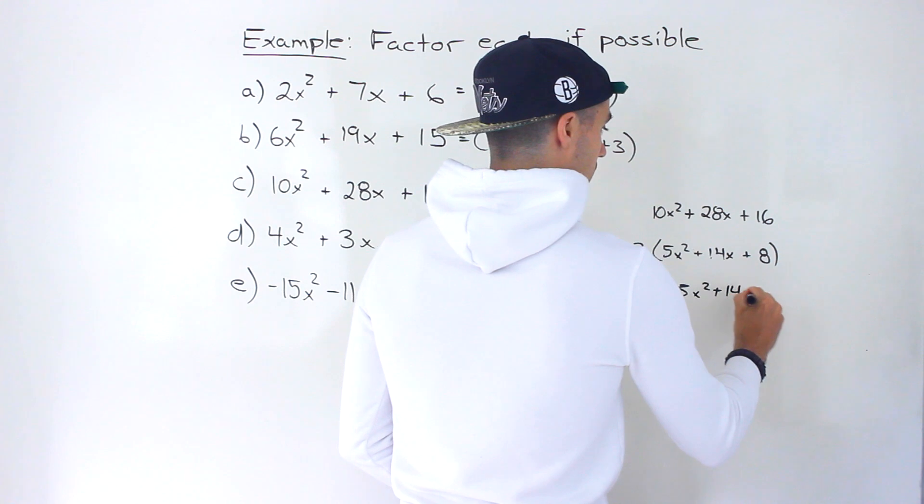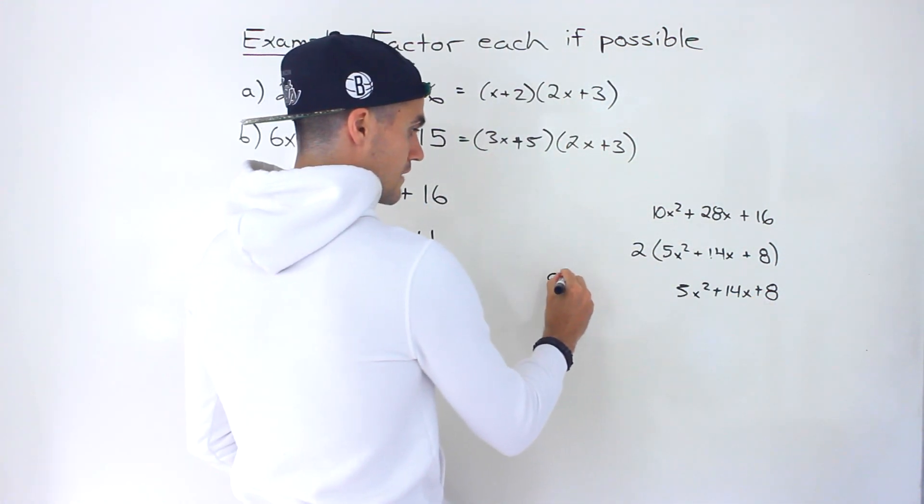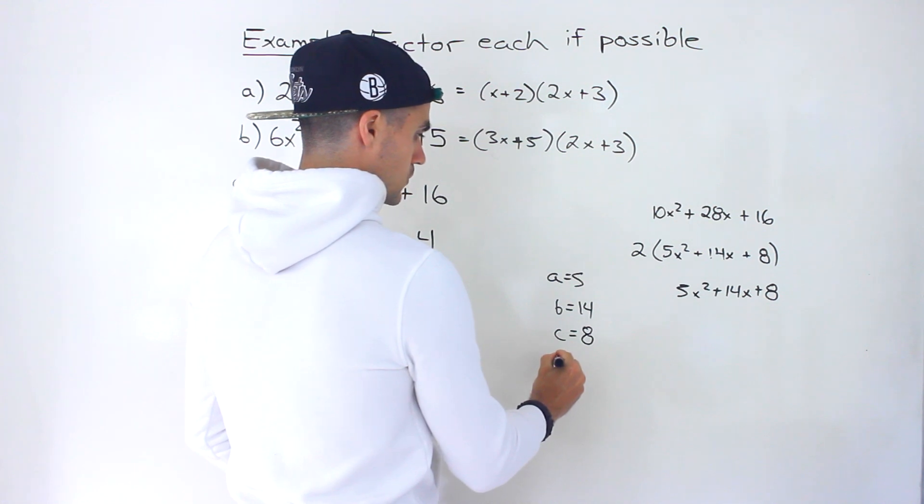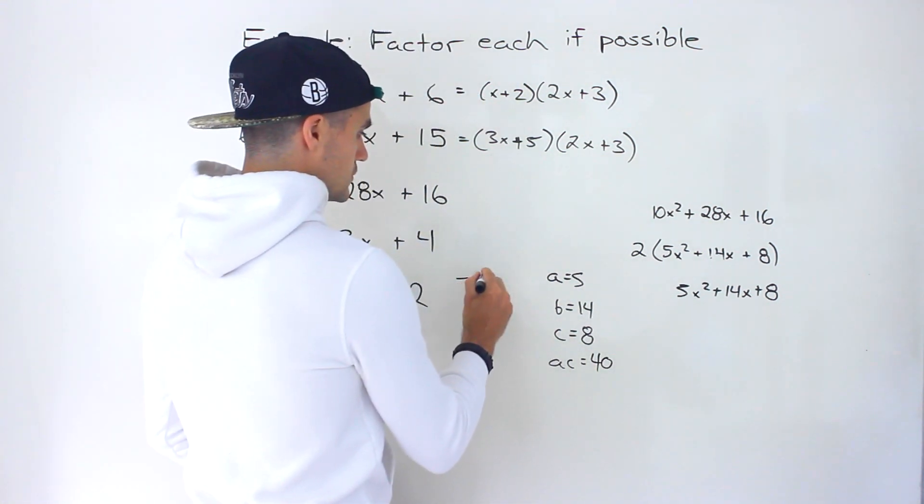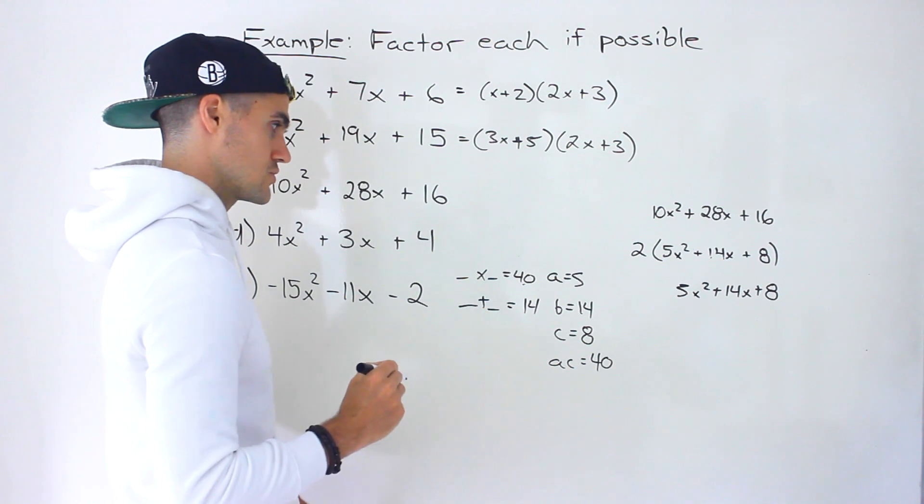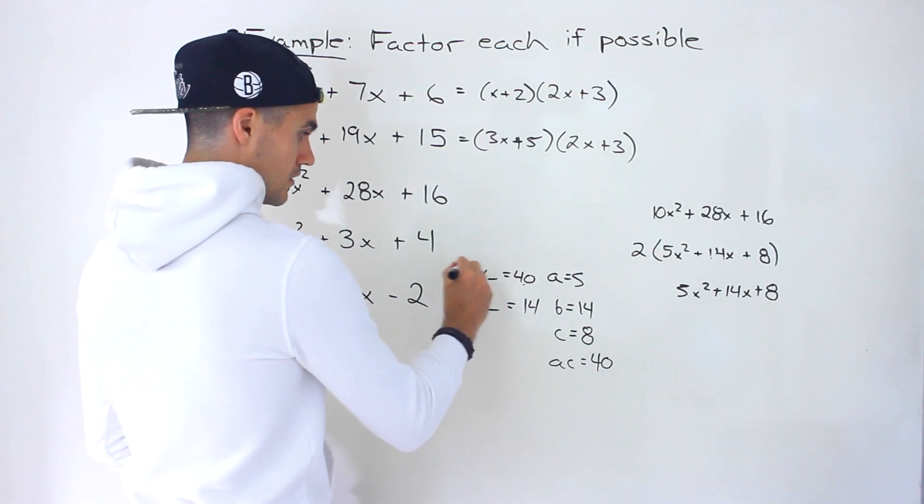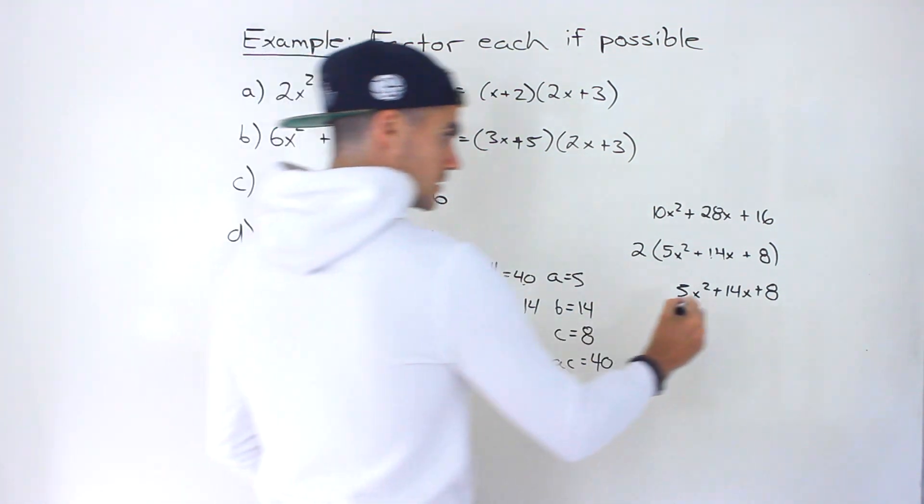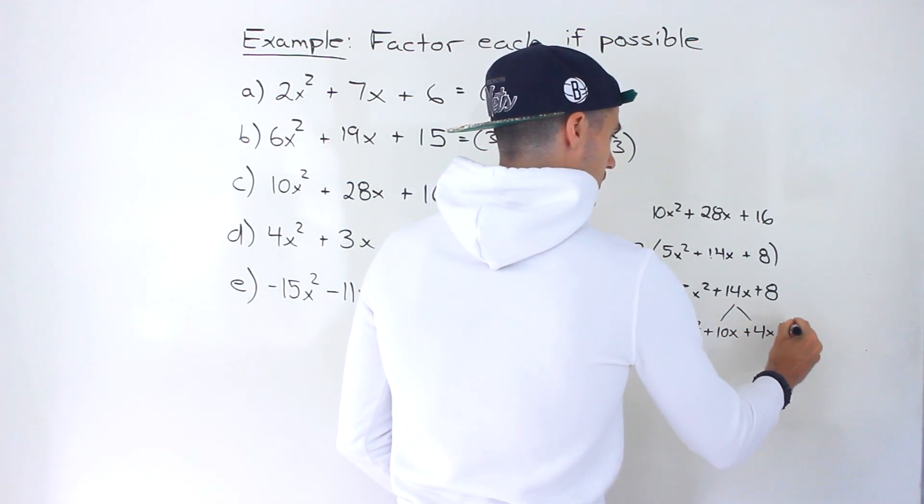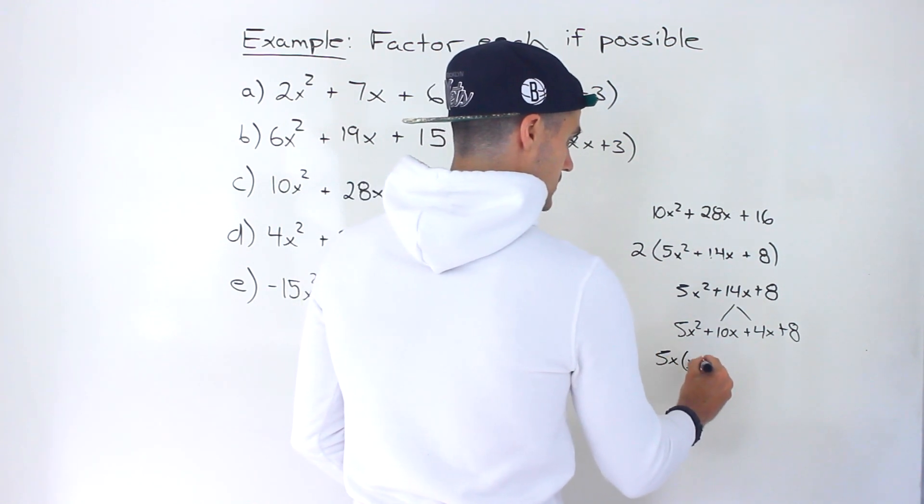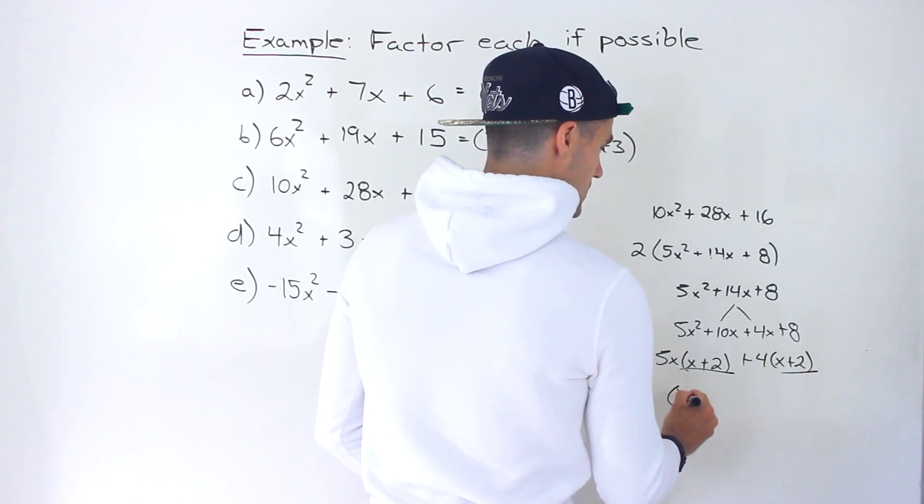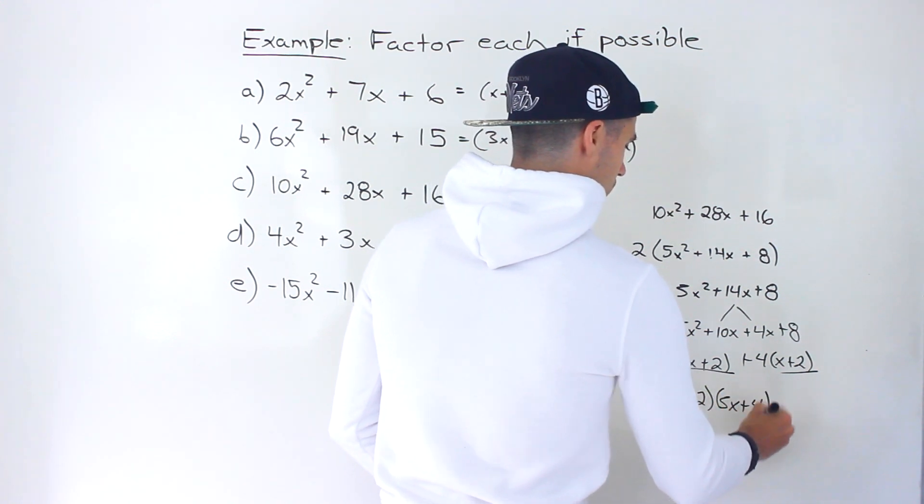Let's see if that factors by decomposition. Sometimes it will, sometimes it may not. But I think this one will. So the AC value would be 40. We've got to find 2 numbers that multiply to 40 and add up to the B value of 14. Those two numbers would be 10 and 4. So we could decompose this. From these two, we could take out a 5x, and we'd be left with x + 2. From these two, we could take out a 4, and we'd be left with x + 2. As expected, that bracket should be the same.